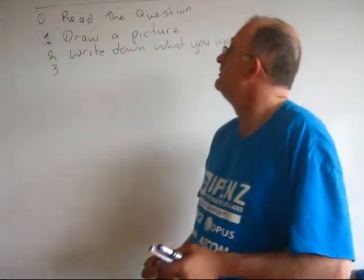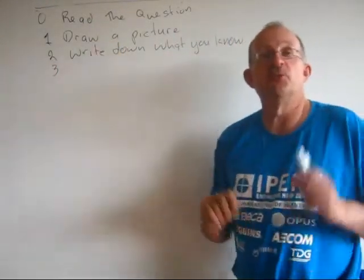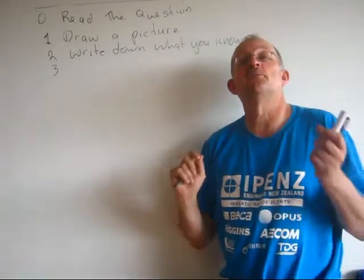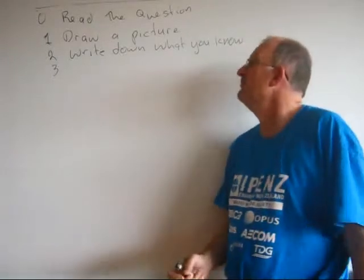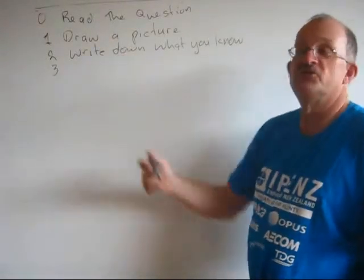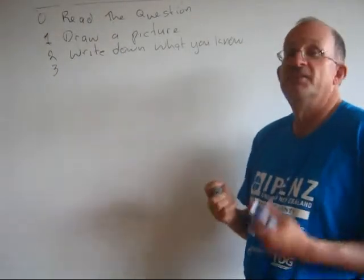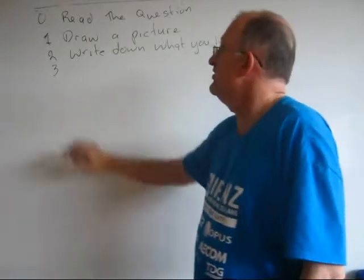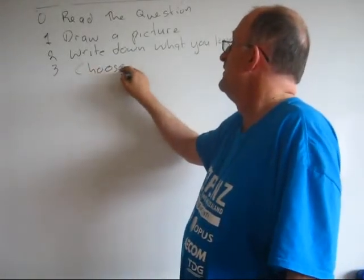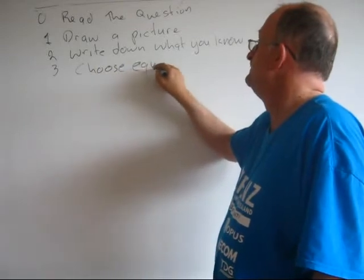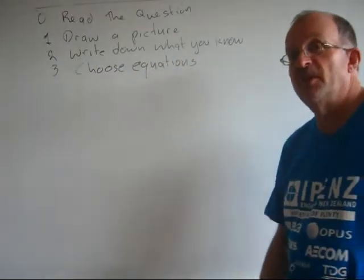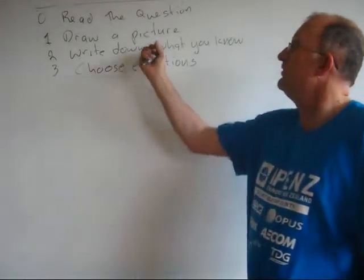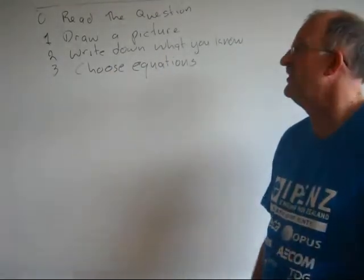Step three. These first two steps, what they do is they define the problem. They let you see in your head what is the problem. Draw a picture. Write down what you know. These define the problem. Now we've got to solve the problem. So usually at some point we have to choose equations. It's a lot easier to figure out which equations to choose if you've written down what you know.